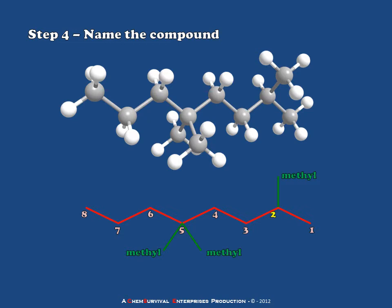In the final step of the process, I'll name my compound. In this case, it is an eight-carbon parent hydrocarbon with three methyls at the two, five, and five positions. So this will be an octane, and I will indicate the 2,5,5-trimethyl ahead of the octane. This is a 2,5,5-trimethyloctane molecule.